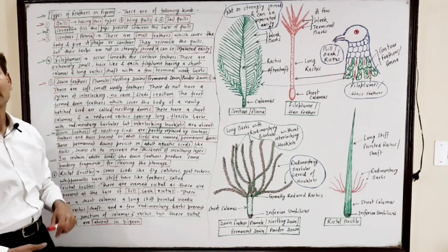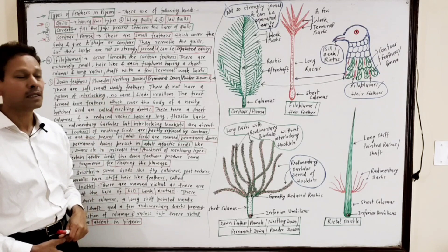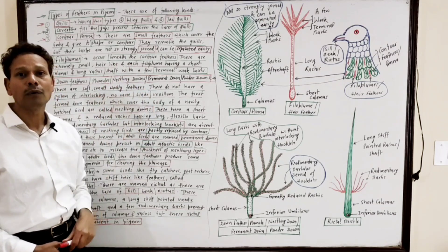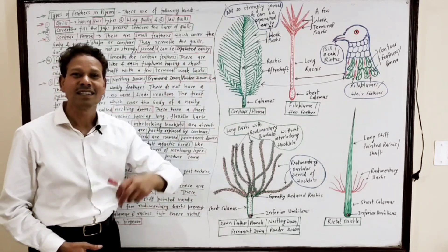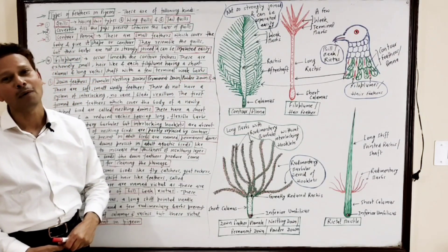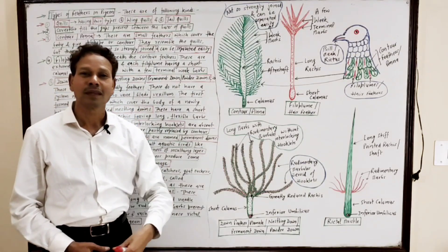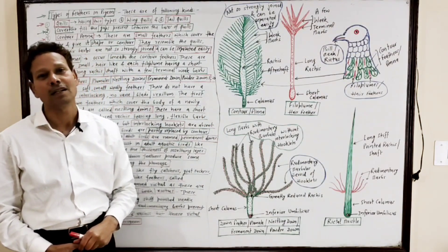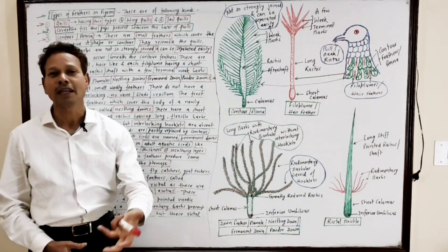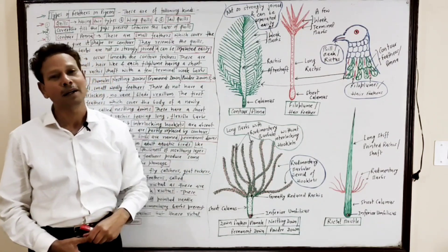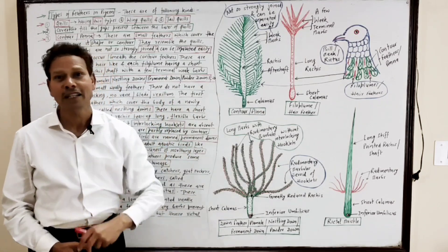Down feathers are also named plumes. There are nestling down and permanent down types, as well as powder downs. Down feathers are the first feathers that cover the body surface of a newly hatched bird, so they are named nestling down feathers.